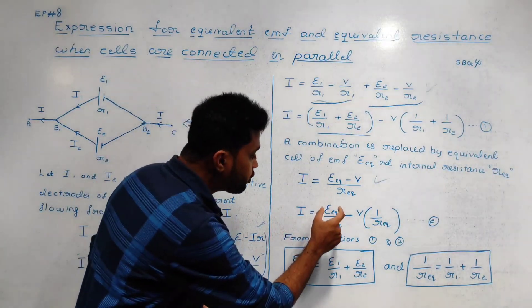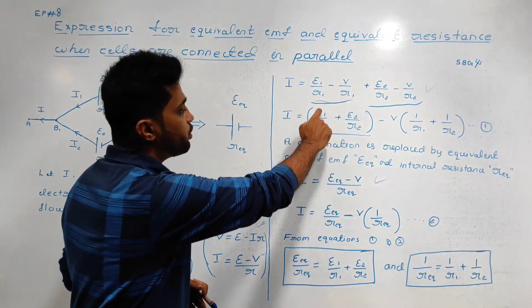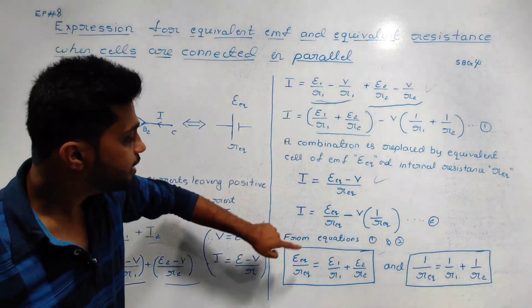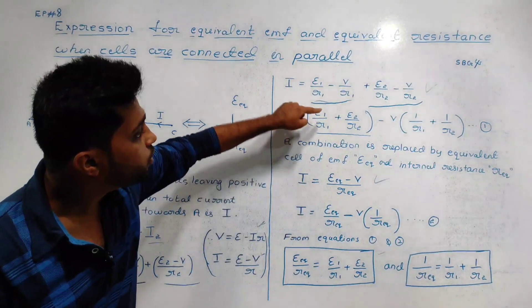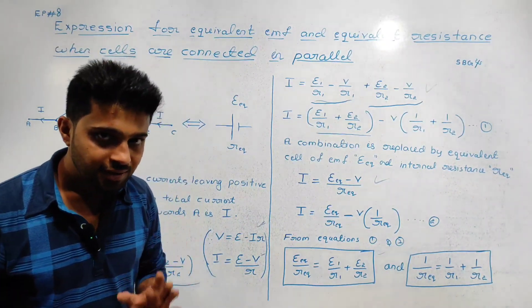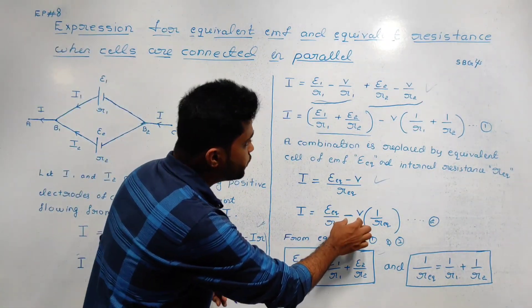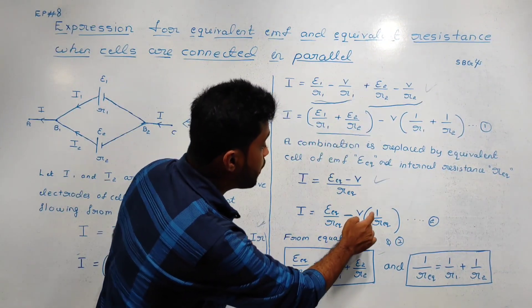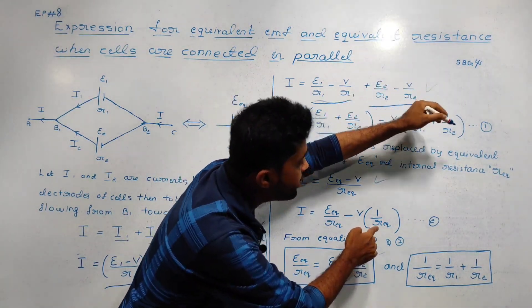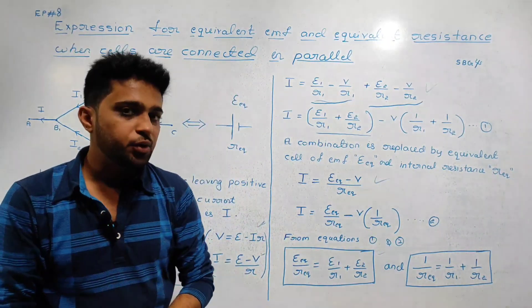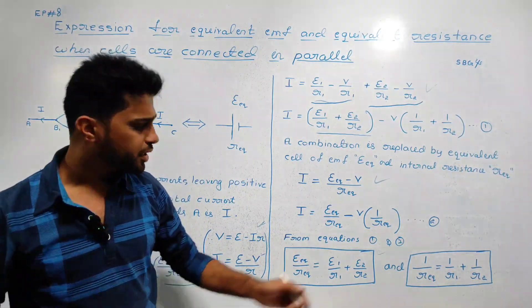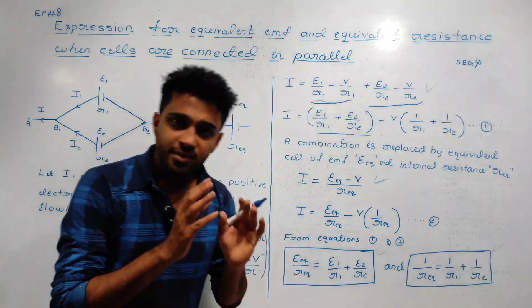Comparing equation one and equation two, we get: E_eq divided by r_eq is equal to E1 by r1 plus E2 by r2. So the equation is clear.